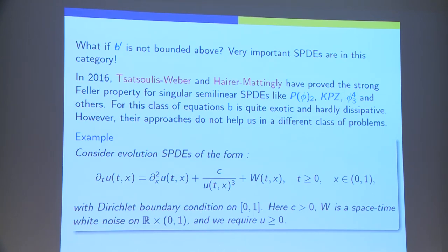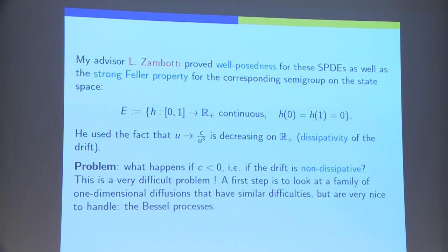Now, these articles did not answer the problems encountered when I studied SPDEs as the following. I'm interested in evolution SPDEs with a drift term in 1 over u cube. When C is positive, we have no problem. Actually, my PhD advisor Lorenzo Zambotti proved well-posedness for these SPDEs when the drift term is of the form C over u cube, with C positive. And, he proved that we have strong Feller property. This relied on the fact that the function C over u cube is decreasing on ℝ plus. So, we have some dissipativity. And, the question was, what happens if C is negative? Because, in this case, we don't have dissipativity anymore.